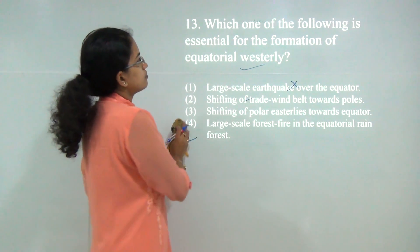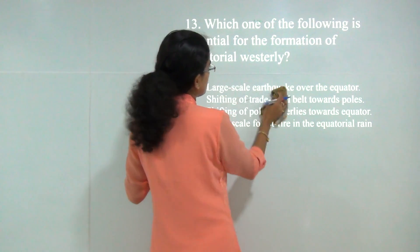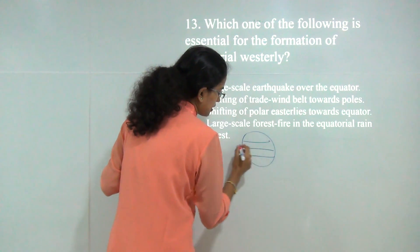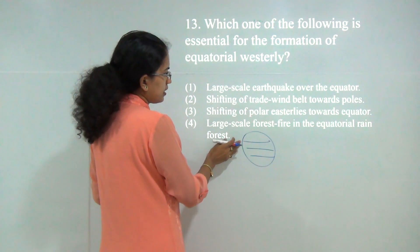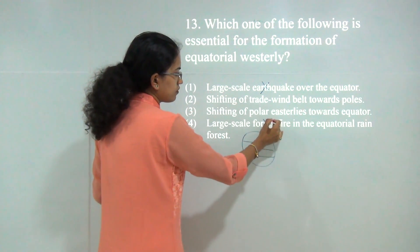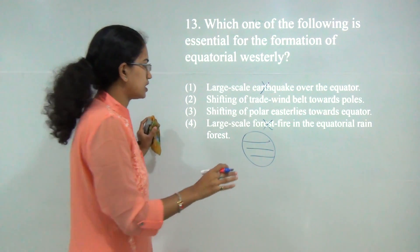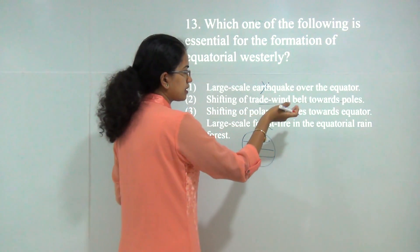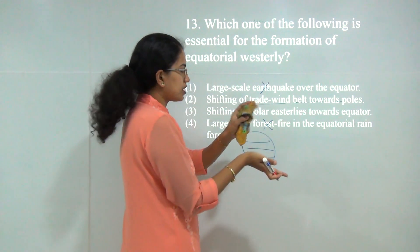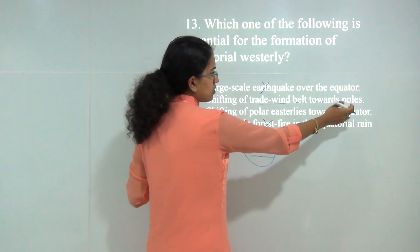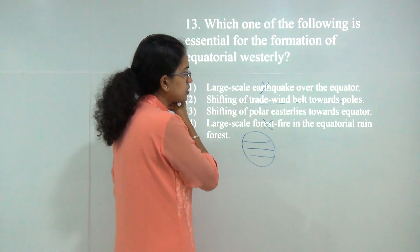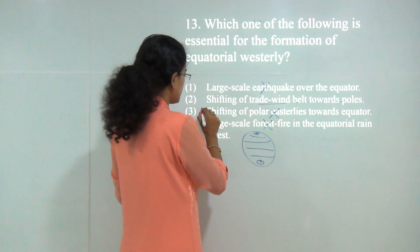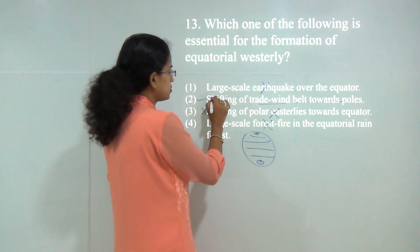Next question: which of the following is essential for the formation of equatorial westerlies? There is no impact of earthquake or forest fire, so we can remove those choices straight away. The nearest match would be trade winds moving poleward — moving away from the equator towards the poles. Polar easterlies play no role, as they originate at the poles. So 3 would be incorrect and the answer would be 2.